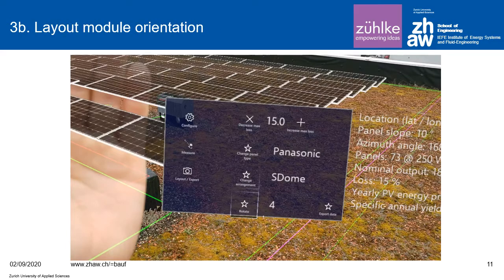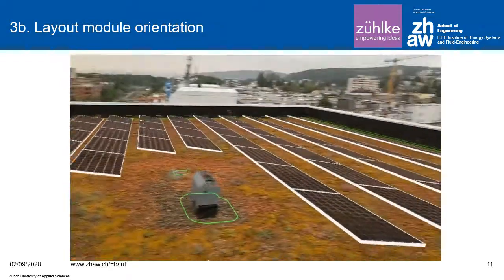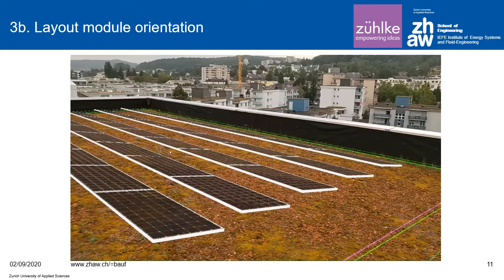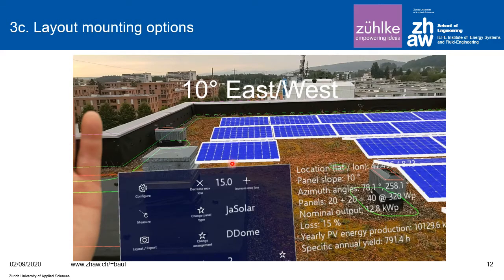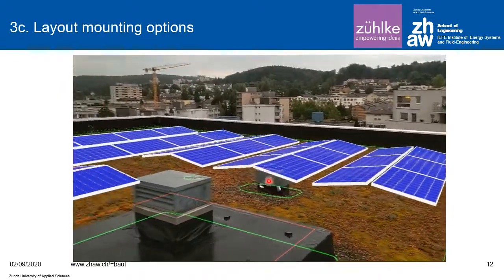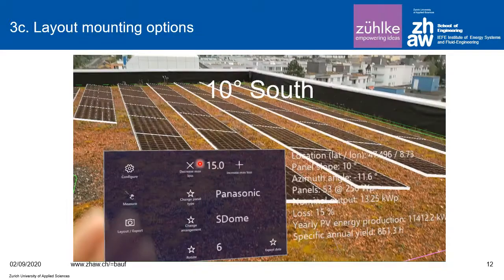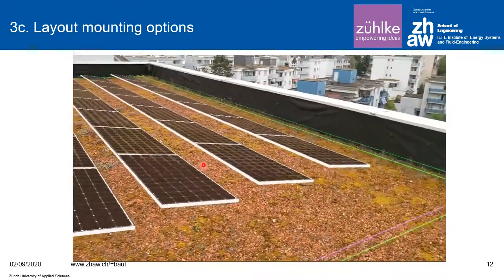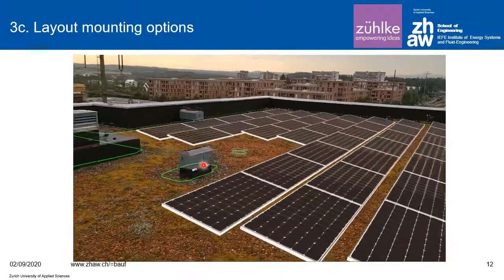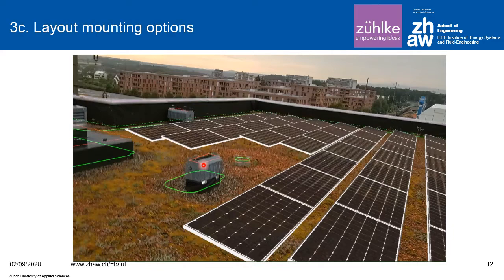The second task within task 3 layout is setting the final orientation of the PV modules — south or east — with just a click on the HoloLens menu. Another choice is the east-west mounting configuration, shown here. If we take the 10-degree south orientation with a different module type, we can choose between the various options right on the roof to find what best fits the PV plant.